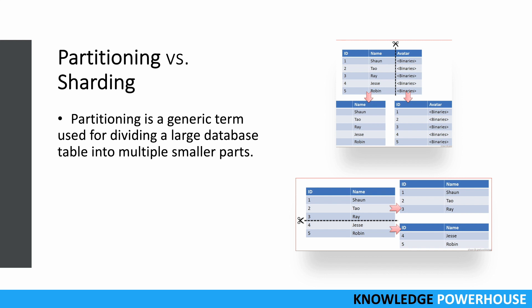The first way is vertical partitioning — you divide by columns, putting some columns in one table and other columns in another. For example, name on one side and ID and avatar on the other. The second way is horizontal partitioning, where you divide by rows — for example, three rows in one part and two rows in another part, so different users' data is in different parts.